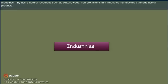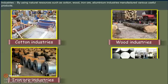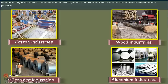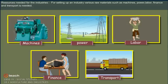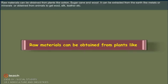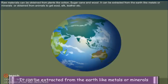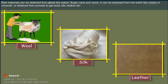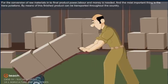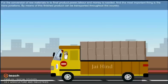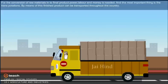Industries use natural resources such as cotton, wood, iron ore, and aluminium to manufacture various useful products. For setting up an industry, various raw materials, machines, power, labour, finance, and transport are needed. Raw materials can be obtained from plants like cotton, sugarcane, and wood; extracted from the earth as metals or minerals; or obtained from animals as wool, silk, and leather. Power, labour, and money are needed to convert raw materials into finished products, and transportation is essential to distribute them.